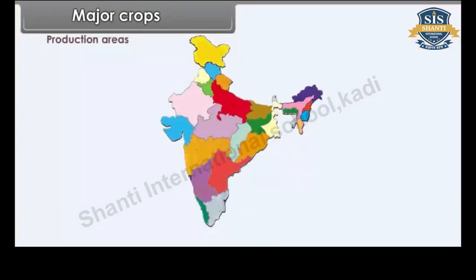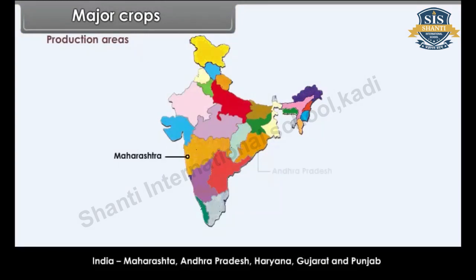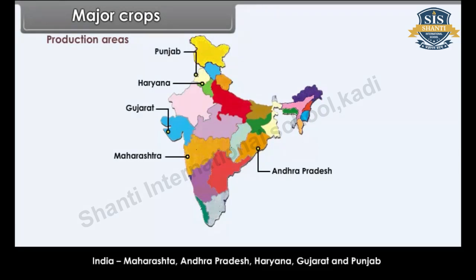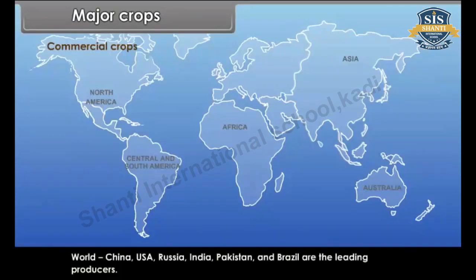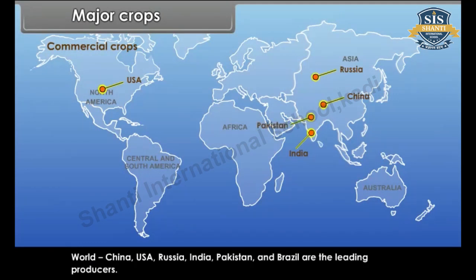Production areas of cotton in India include Maharashtra, Andhra Pradesh, Haryana, Gujarat and Punjab. Pakistan and Brazil are also leading producers.